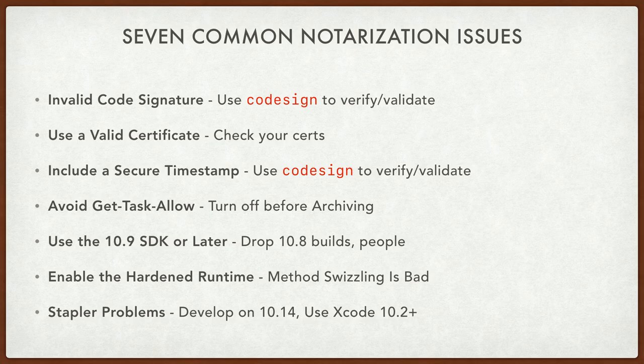You also have to use the 10.9 SDK or later — you have to drop the 10.8 builds, people. Please, for the love of God, it's time. You also have to enable the hardened runtime because method swizzling is bad. Essentially, if you're not enabling the hardened runtime, this will not work for you. You cannot notarize your application this way. And that means people have to actually whitelist your application. And then lastly but not least, there are stapler problems in macOS 10.13 and prior. You absolutely, positively need to be using Xcode 10.2 or later. If you are using earlier versions of stapler, you may have unintended results — and the result is it doesn't work. So upgrade. Keep the pace, my friends.